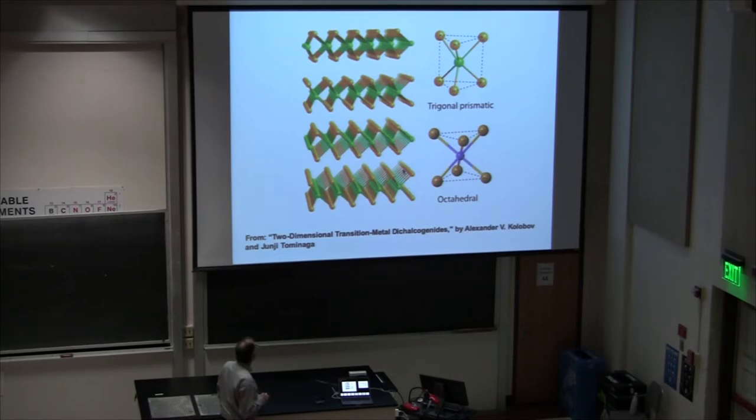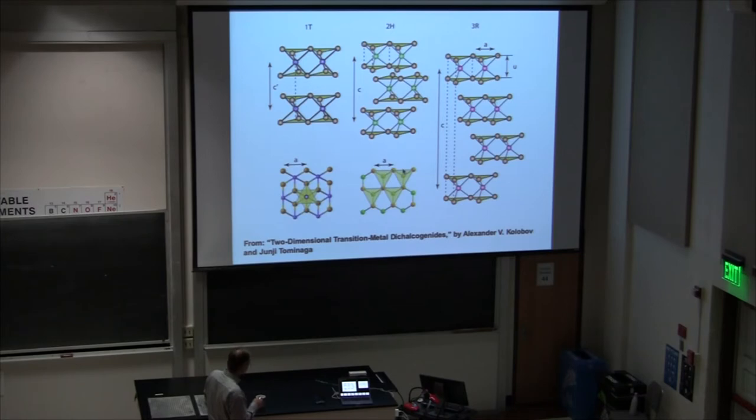The structures typically look like this. You have chalcogen atoms in one layer, metal atoms in another layer, and then chalcogen atoms in the third layer here. The metal atoms have two common types of coordination: one is trigonal prismatic, and one is octahedral. This triangle is just on top of this bottom triangle, these are on top of each other, and here they're not on top of each other. Three common structure types are what are called 1T, 2H, and 3R. The 1 means there's one of these layers per unit cell, 2 means two blocks, 3 means three blocks. T is for tetragonal, H is for hexagonal, and R is for rhombohedral.